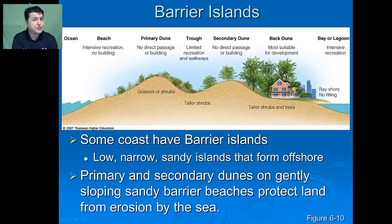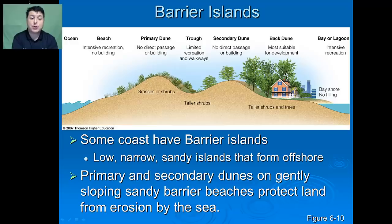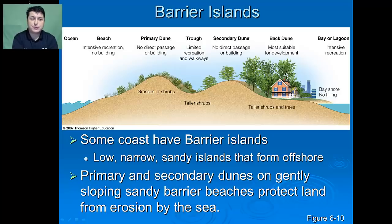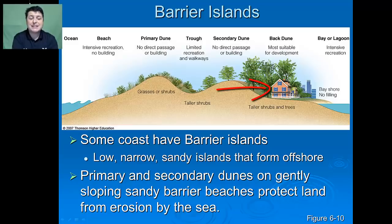Some coasts actually have barrier islands — low, narrow, sandy islands that form offshore. The presence of piles of sand called dunes on the gently sloping sandy barrier beaches protects the land from erosion by the sea. The dunes are maintained by grasses or shrubs. As a result of intensive recreation or building, these barrier islands can be degraded, diminishing their ability to perform their protective function.